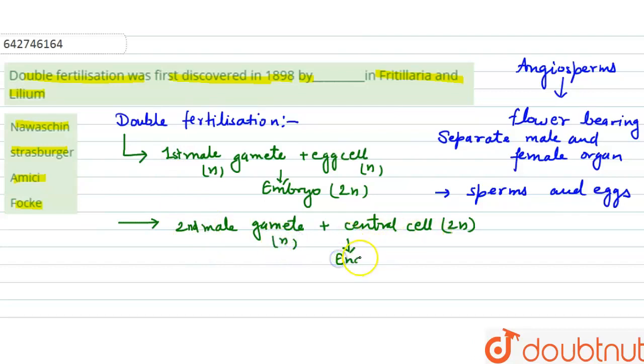lead to the formation of endosperm, that is triploid in nature. So because of this second male gamete and central cell fusion, this is known as the triple fusion because three nuclei are involved in this fusion. So this is the type of double fertilization in which two fertilization processes take place.